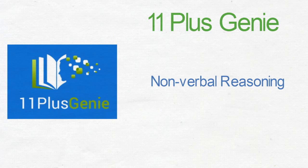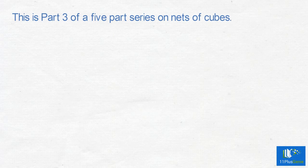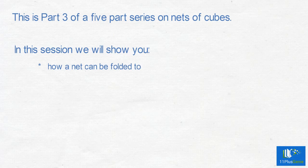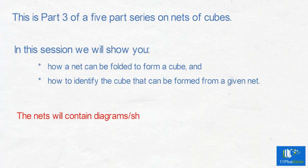Nonverbal reasoning type 15: nets of cubes, part 3. This is part 3 of a five-part series on nets of cubes. In this session we will show you how a net can be folded to form a cube, and how to identify the cube that can be formed from the given net. The net will contain diagrams or shapes like arrows, circles, and triangles on its faces.